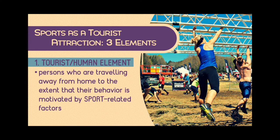Remember that we have the seven tourism sectors: destination, attraction, events management, accommodation, transportation, intermediaries, and policy sector. What makes a certain tourism product a sports tourism product is that the attraction is related to sports. The first element of a sports tourism attraction is the tourist or human element — the person traveling to the attraction is motivated to travel away from home by sports-related factors.